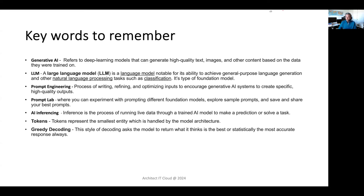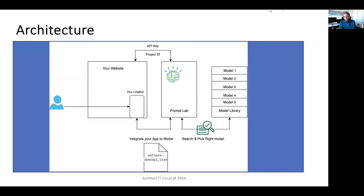AI inferencing is using live data into your model so that the model uses the live data and produces a unique output. And tokens — tokens is the way you can control certain limitations when you train or prompt your model. You will see this in detail during the hands-on. And greedy decoding — decoding means getting the output. Greedy decoding means the Generative AI model gives the highest-confidence output all the time. That is called greedy decoding.